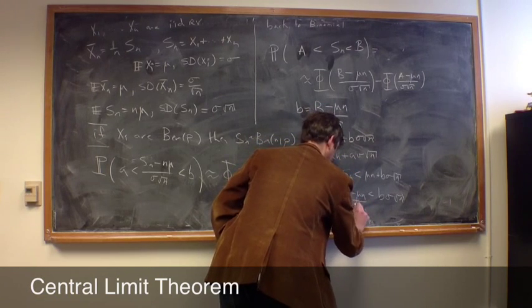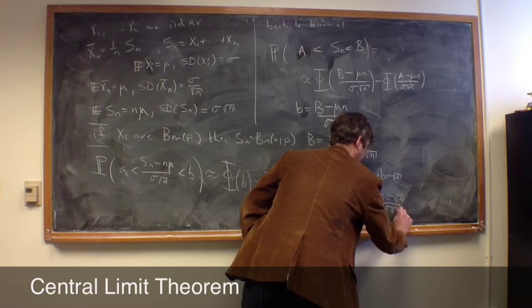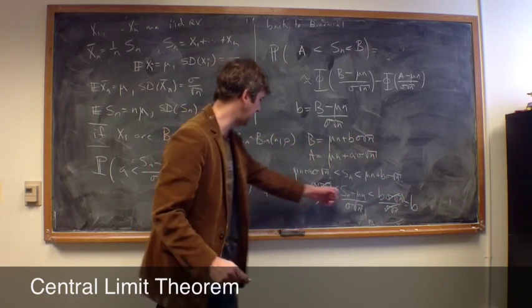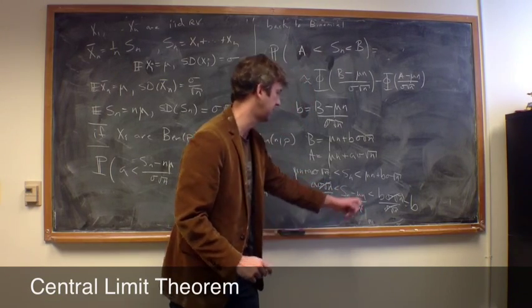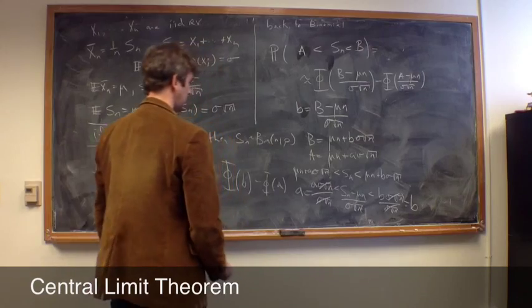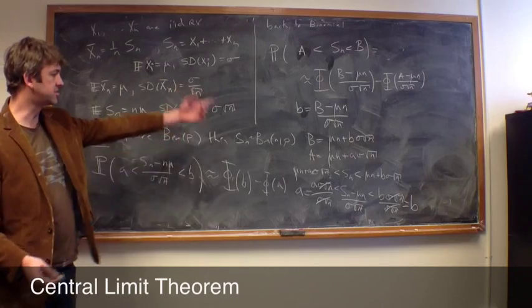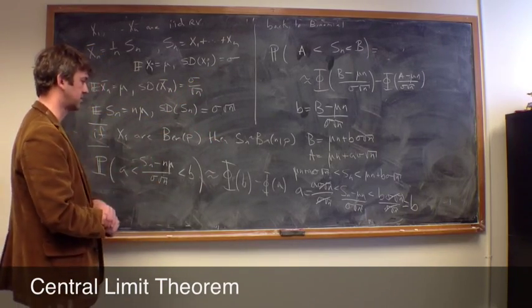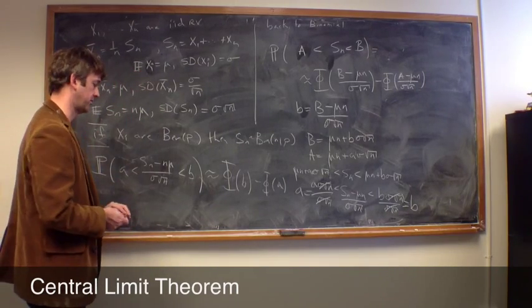This is over sigma square root of n. And again, here we have sigma square root of n, and these cancel, and that's just equal to B. And so, we have a is less than Sn minus mu n over sigma square root of n is less than B, which is exactly what this statement says. So, with these choices, they're really just exactly the same thing, except for the continuity correction. But this, we're now stating, is true in general, not just for the binomial distribution.